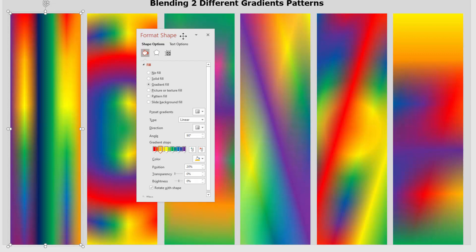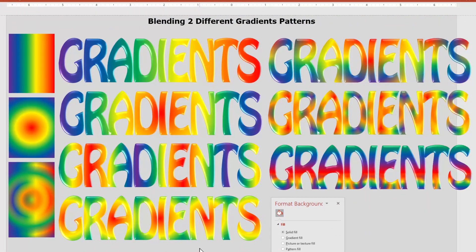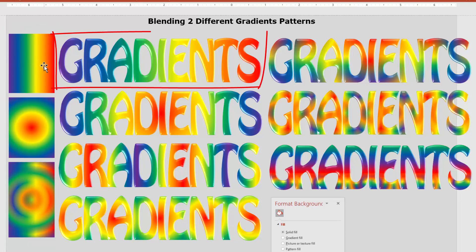How would you use these? Just like you use any other gradient pattern. You can put them in sidebars, shapes, and they work particularly well in text — that's what we're going to show you. Let's make a comparison between regular gradients and blended gradients in text. Here we have a typical linear gradient going left to right, purple to red.